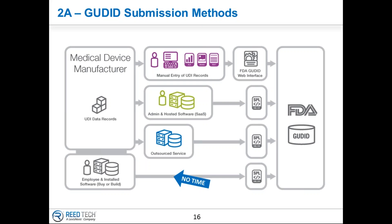The last option that would be viable — except for this timeframe in my opinion — would be to build your own solution inside your four walls, or go out and purchase a piece of software, have it installed, do the IQ, OQ, PQ validation, and training. It's my opinion that this four-month window is insufficient to think of that at this point in time. If you're already well along that way, yes, you can still use it. But if you're embarking on a decision now, it's going to be extremely difficult.